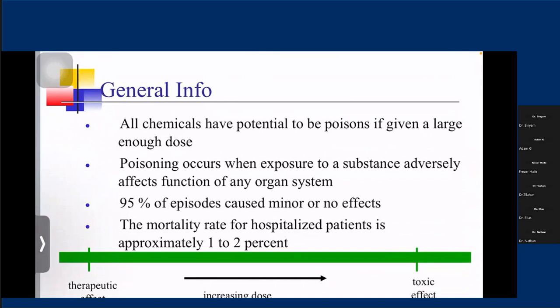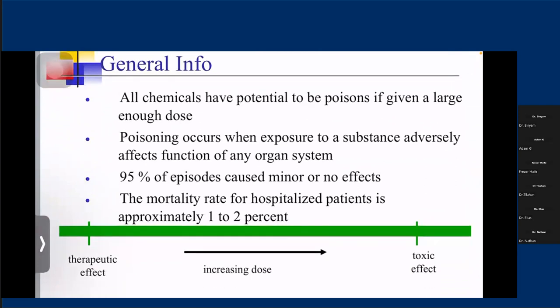General information: as we know, all chemicals have a potential to be poisonous if given at a large dose. All medications, including antibiotics, cardiac medications, and antihypertensive medications that are given for therapeutic reasons, can be consumed at a large dose due to suicidal intent and can cause life-threatening conditions.